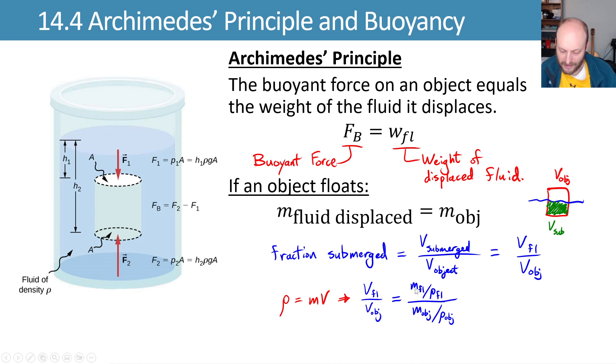This gets interesting because now we can say, since this is mass of the fluid over density of the fluid, divided by mass of the object over density of the object, incorporating what we figured out before, that the mass of the fluid has to equal the mass of the object, these two masses are the same and can cancel out. That means that we can say that our fraction of our object that's going to be submerged is equal to a ratio of the densities of the object to the density of the fluid.